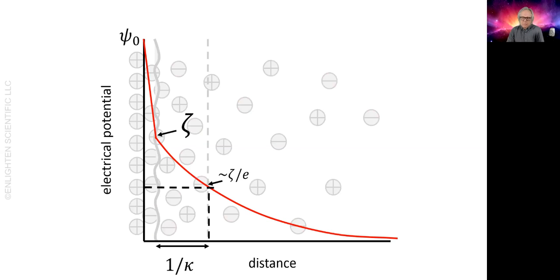A thickness is defined as the distance at which the potential has decayed to one over e of its initial value. And this distance is written as one over kappa.